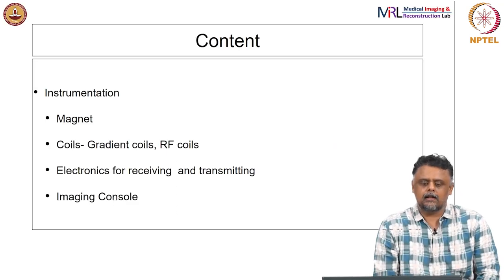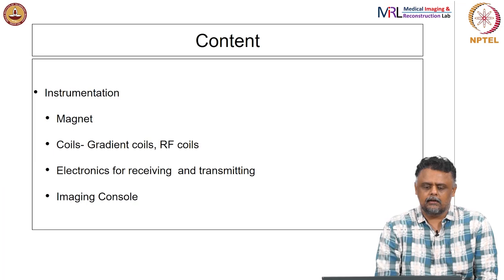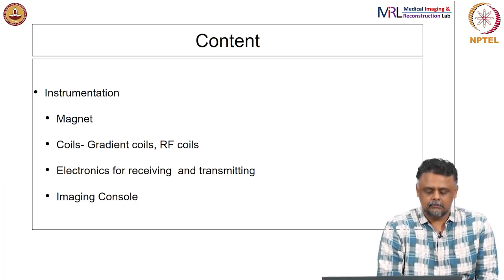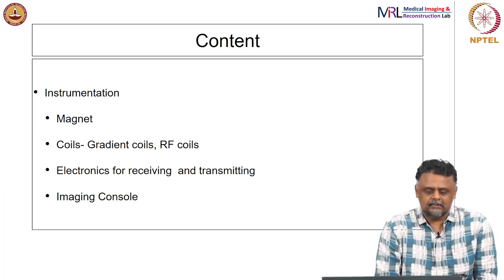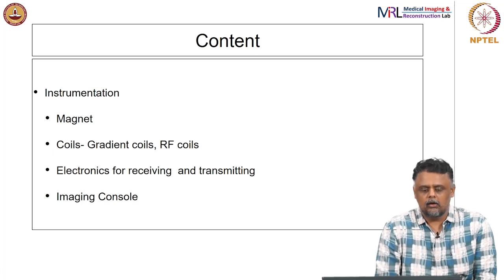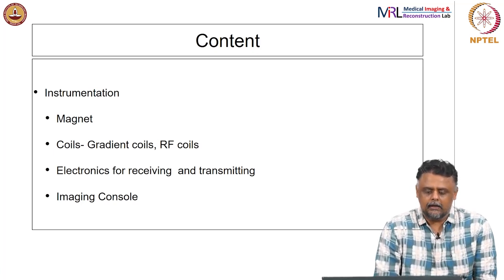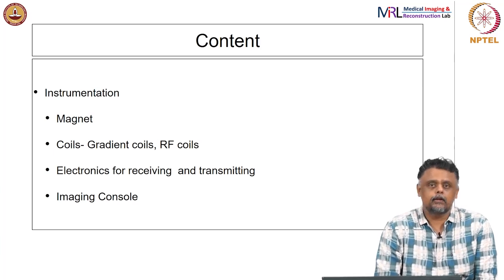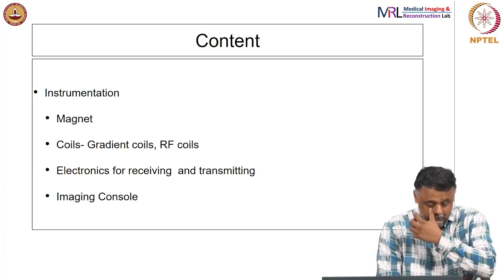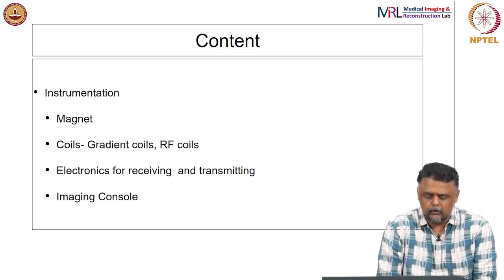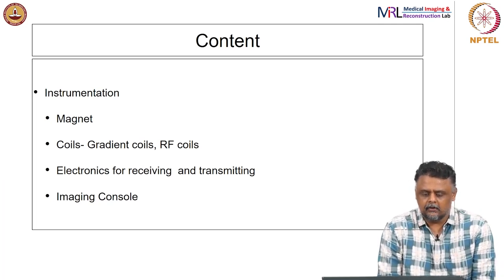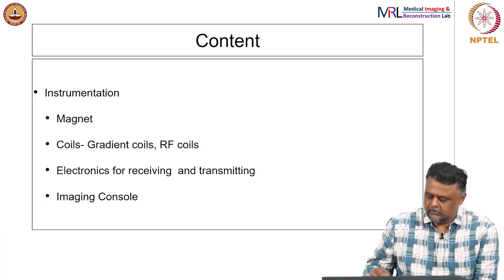This is the overview of the class. We will look at some of the hardware that goes into an MR imaging system — I called it instrumentation but we will only be looking at it superficially, just seeing what the components are. We will look at the main component: the magnet, the gradient coils, the radio frequency coils, the electronics, and the imaging console.